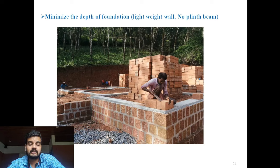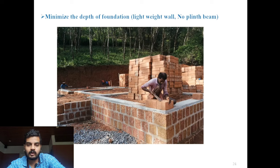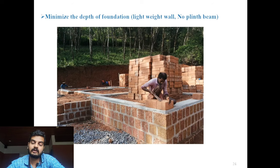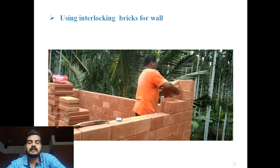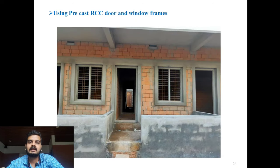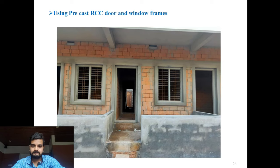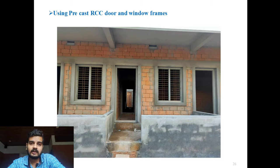Now I will explain how to reduce the construction cost — some methods I have adopted on my own site. First: minimize the depth of foundation, because the wall is lightweight and no plinth beam is needed. For a lightweight wall, heavy foundation is not required and you can avoid the plinth beam. Second method: using interlocking bricks for walls to reduce cost. Third: using precast RCC door frames and window frames instead of wooden frames, which are very cheap compared to wood.